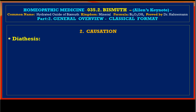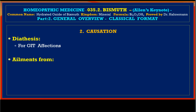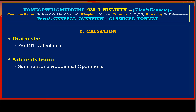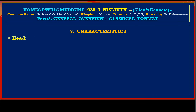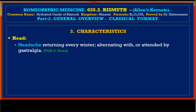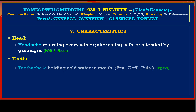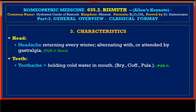Causation: Bismuth has a diathesis for GIT affections and ailments from summer and abdominal operations. In the head region, we find headache returning every winter, alternating with or attended by gastralgia. For teeth, toothache is better by holding cold water in the mouth; similar symptoms are encountered in Bryonia, Coffea, and Pulsatilla.